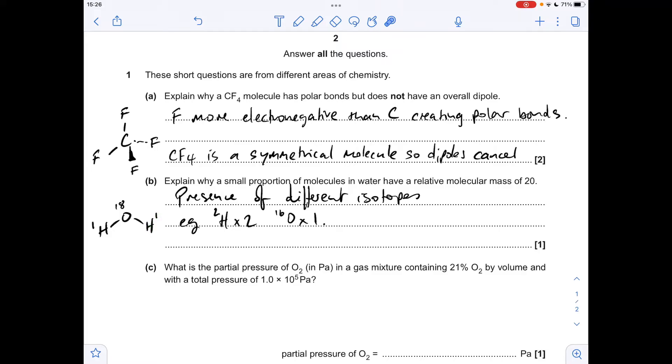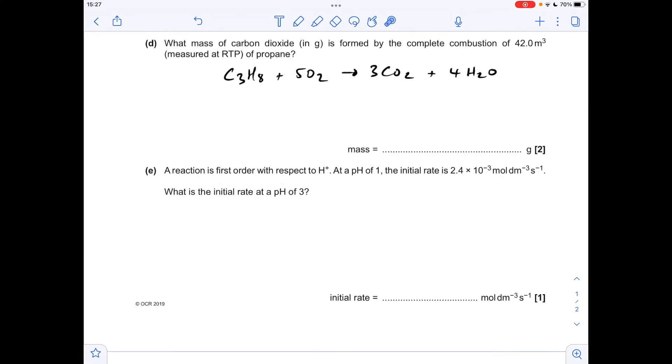Moving on to part c. Partial pressure is equal to the mole fraction times the total pressure. So the partial pressure of oxygen is going to be its mole fraction, which is going to be 0.21 because for every 100 molecules we're talking about 21 being oxygen. So 0.21 times that total pressure, which comes out at a partial pressure of 21,000 pascals.